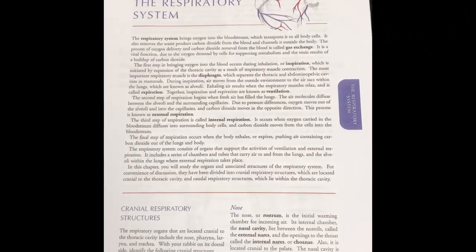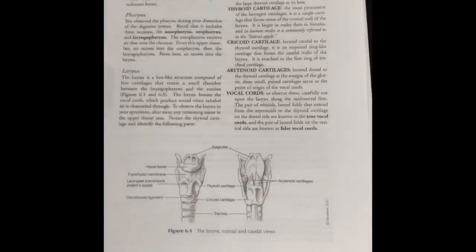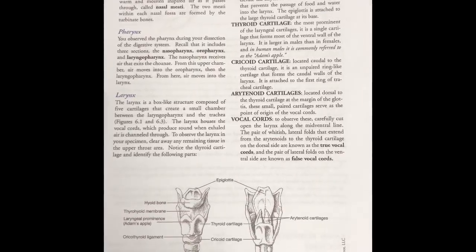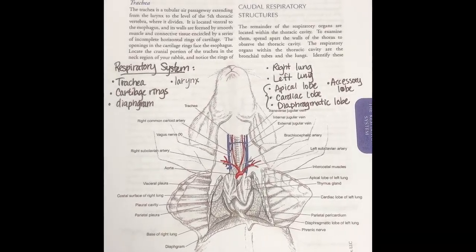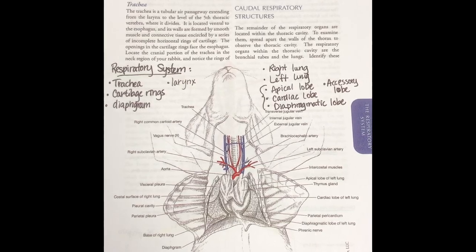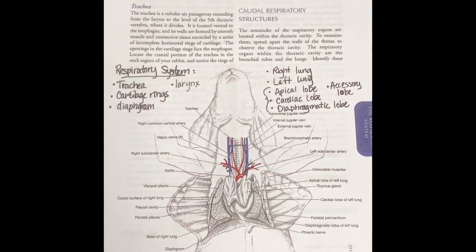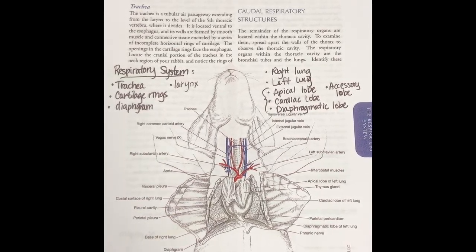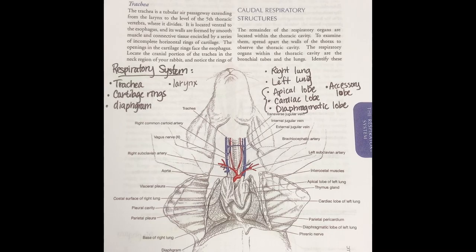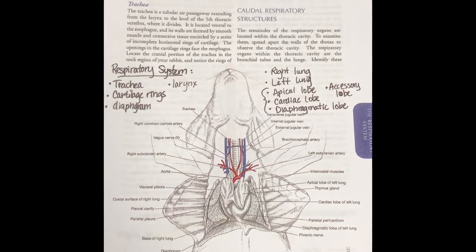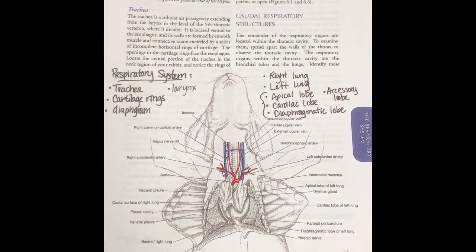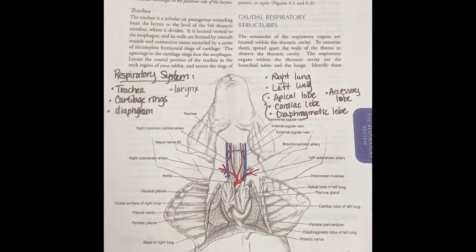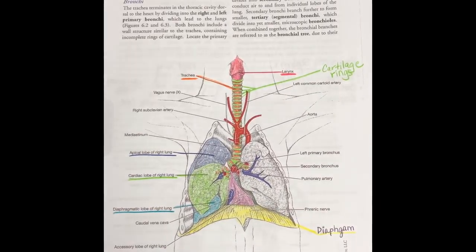Hi guys, we're going to get started with the respiratory system dissection. Here's the first page, showing a picture of the larynx, which is at the top of the trachea. We're going over the parts we're going to dissect: the trachea, the cartilage rings, the diaphragm, the larynx at the top, the difference between the right and left lung, the apical lobe at the top, the cardiac lobe which sits next to the heart, the diaphragmatic lobe which sits on the diaphragm, and the accessory lobe tucked underneath the heart.